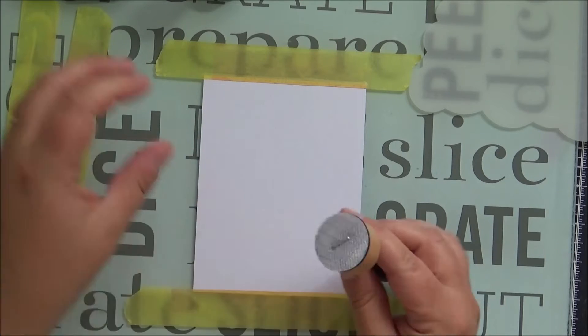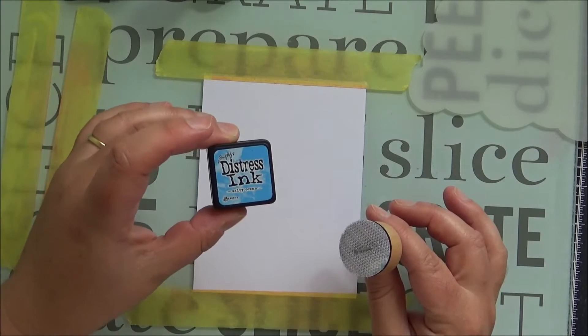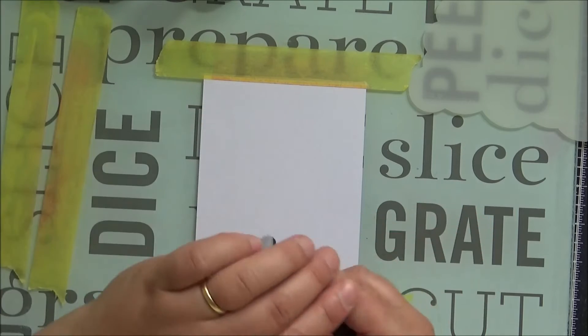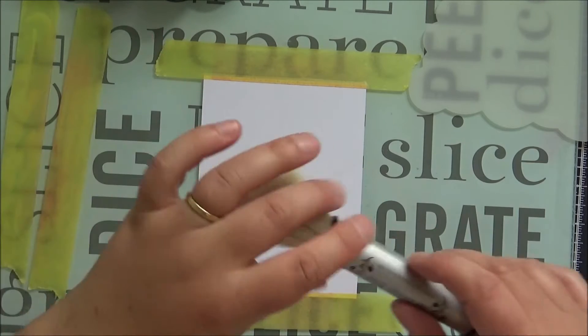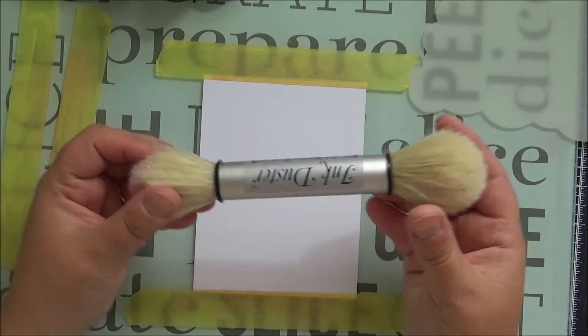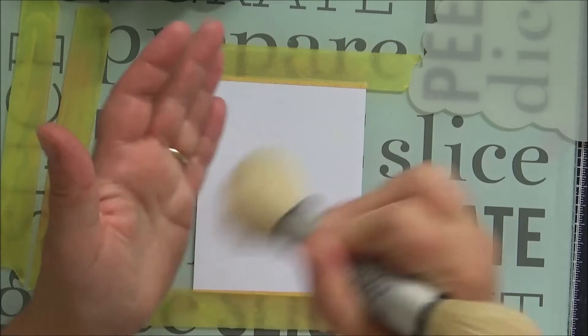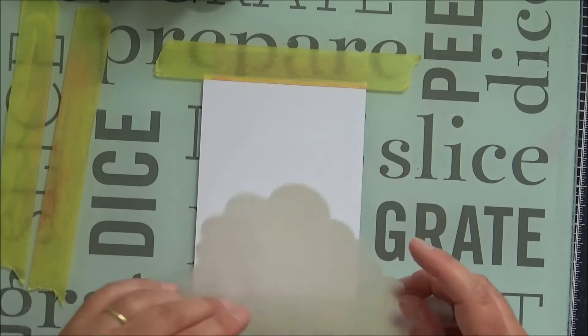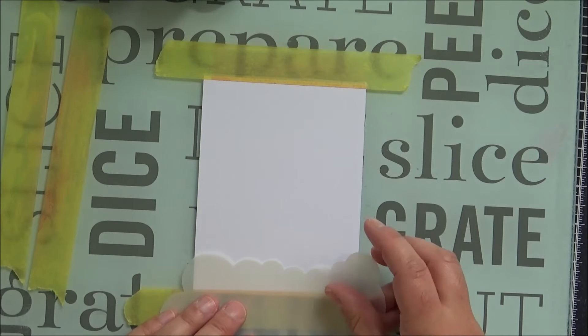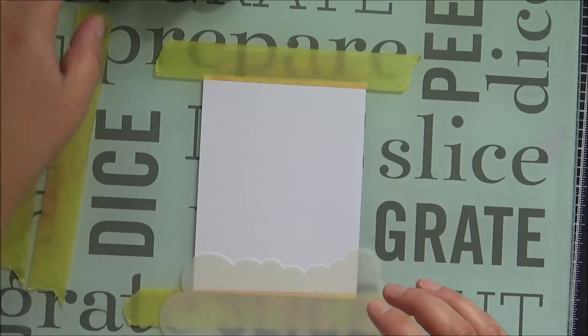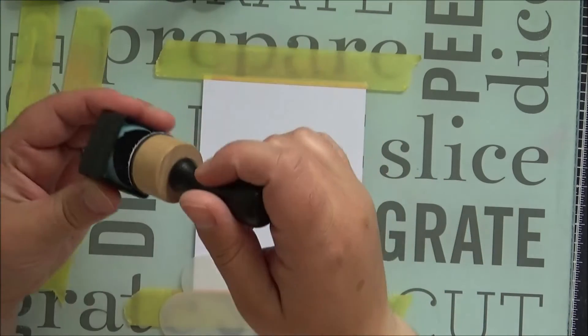I've got myself just some plain white card, it's a nice thick smooth card. There's an ink duster, it's double-ended, and you're supposed to brush it on your hand to get rid of some of the little bristles if they're loose.